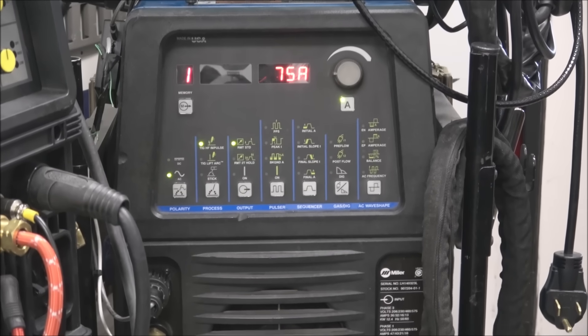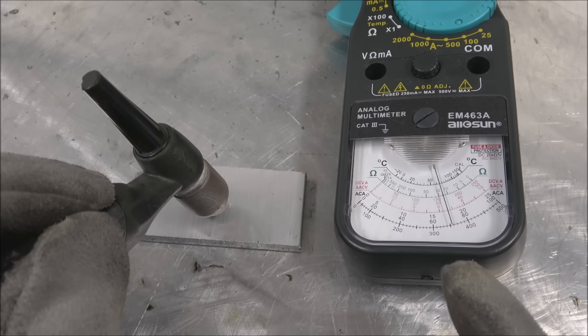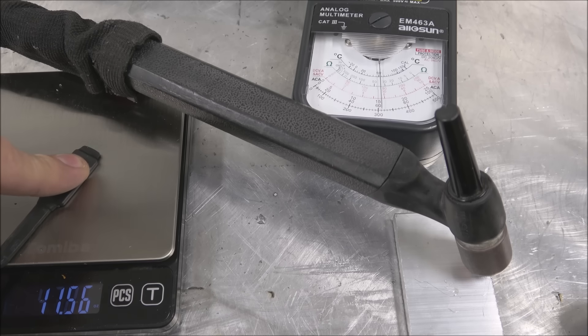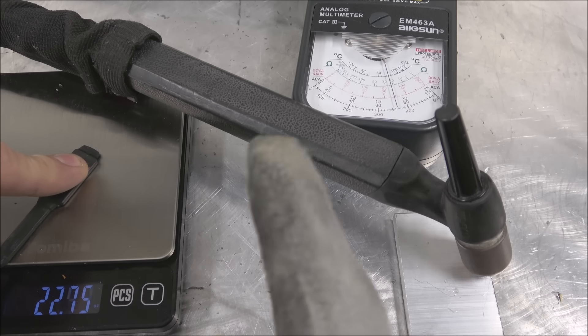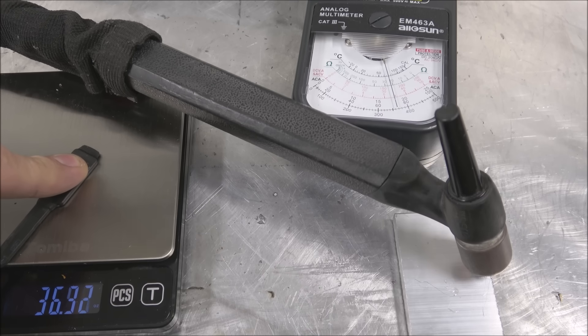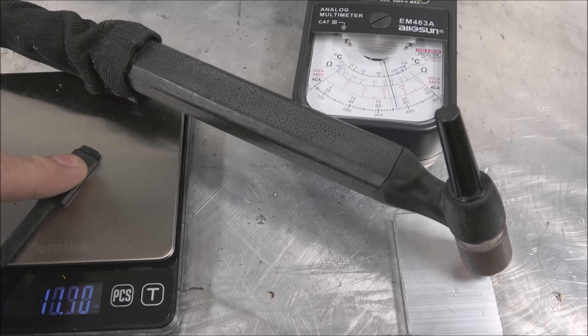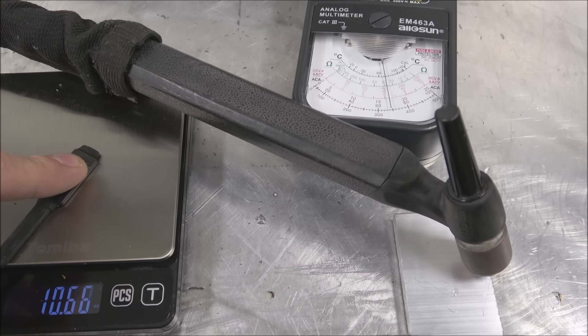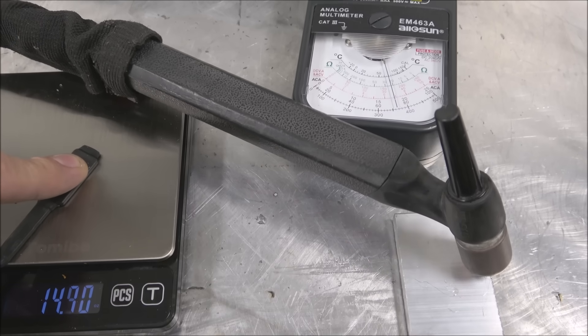Now I have the welder set at 75 amps. Right now I'm pushing really hard just to show you the max amperage. Then I'm going to back off. It starts jumping down from the max amperage around what, I don't know, 11, 12 ounces maybe.